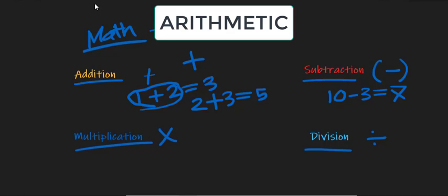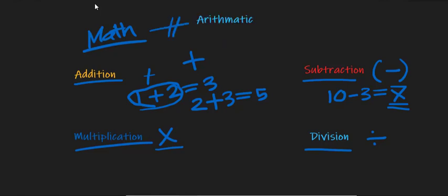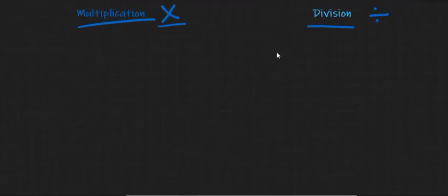For example, we took away three from ten and we get the result seven. Multiplication. What does multiplication do? We actually use the symbol times to do our multiplication problem.